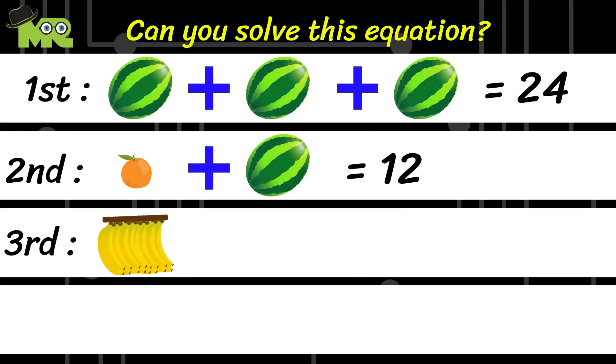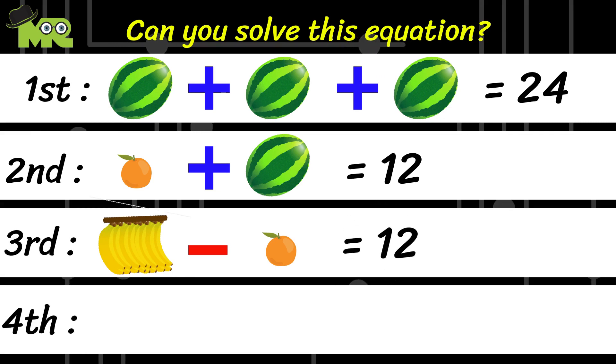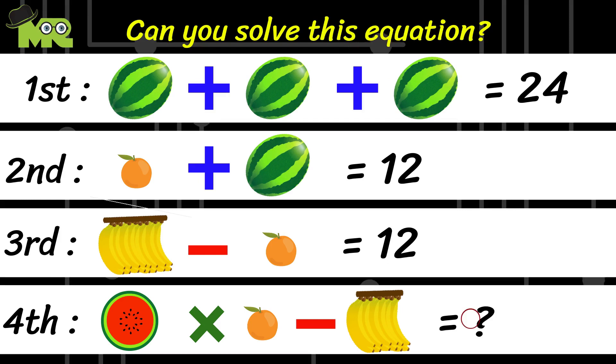The third equation is, if this bunch of bananas minus an orange is equal to 12, what would your answer for the fourth equation be? Half a watermelon multiplied by an orange minus this bunch of bananas.